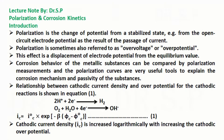Polarization is sometimes also referred to as overvoltage or overpotential, and this effect is a displacement of electrode potential from the equilibrium value. Corrosion behavior of metallic substances can be compared by polarization measurements, and polarization curves are very useful tools to explain the corrosion mechanism and passivity of the substances.